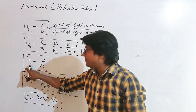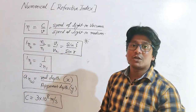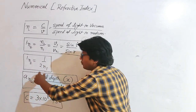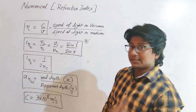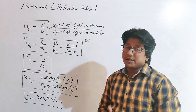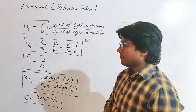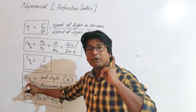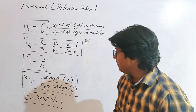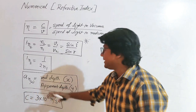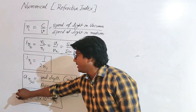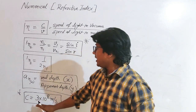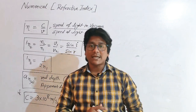Remember that 2n1, the refractive index of first medium with respect to second, is the reciprocal of 1n2. The last formula is the real depth upon apparent depth formula, used when an object is submerged in a liquid: refractive index of water with respect to air equals real depth upon apparent depth. Also remember the speed of light is 3 × 10⁸ meters per second.